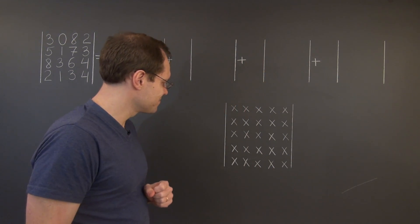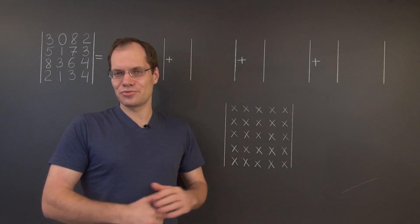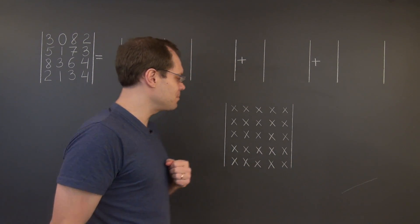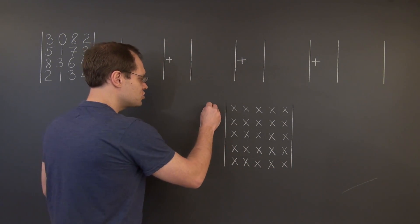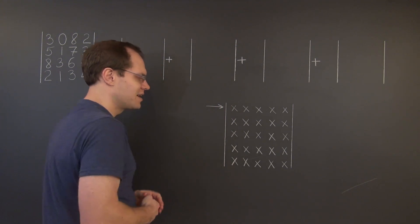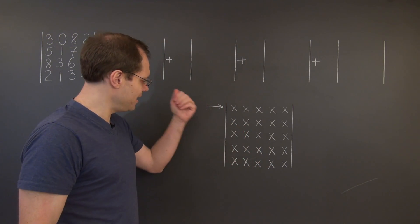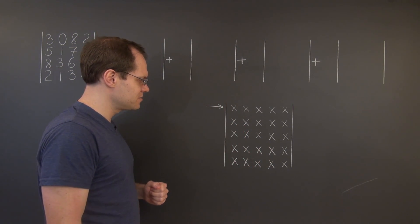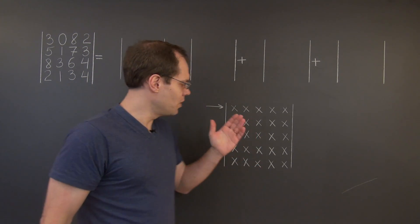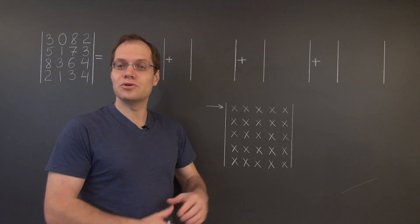Here is how it works. It actually works for any row or column, so let me first show you what will happen if we chose to work with the first row. According to this expansion, this n by n determinant equals the sum of n terms, one for each entry in the chosen row.